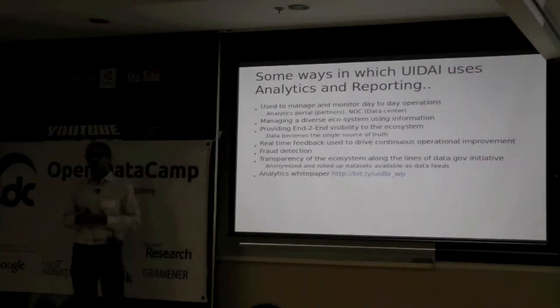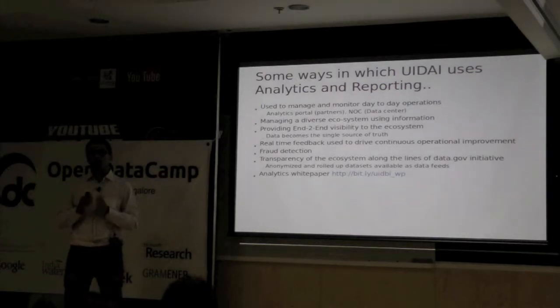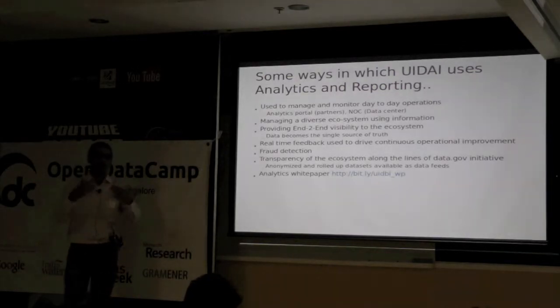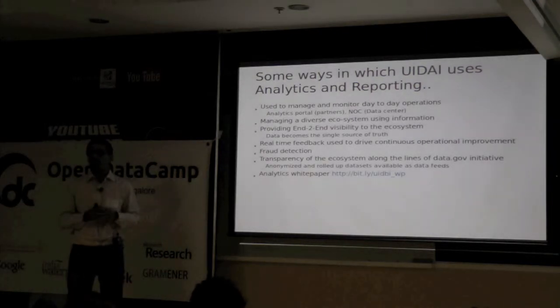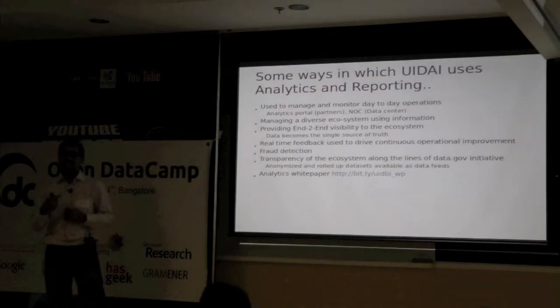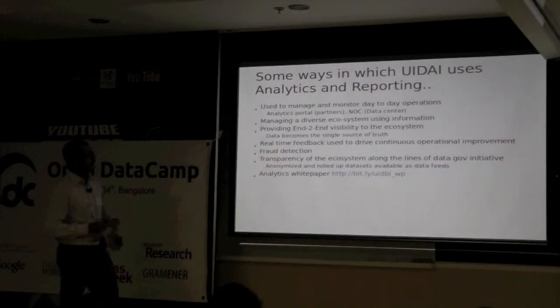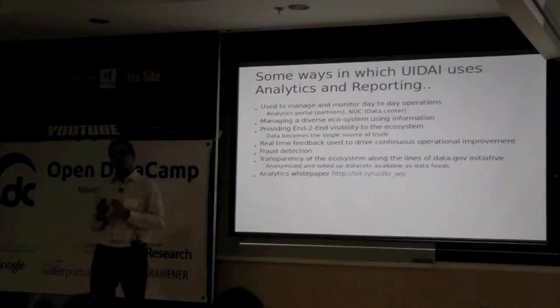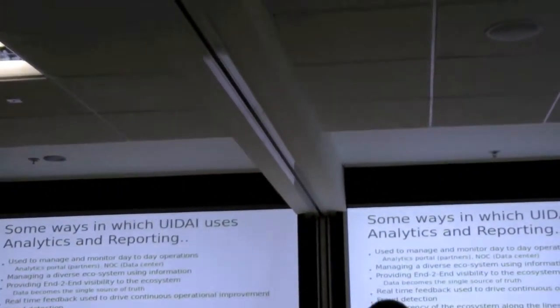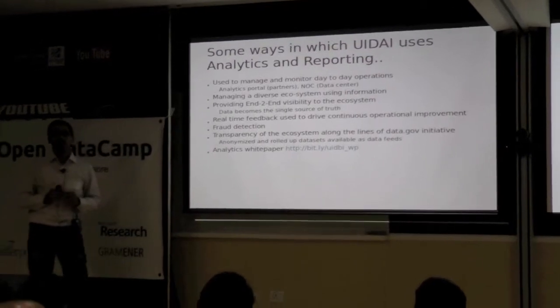We have fraud detection modules because there is obviously going to be natural behavior toward trying to beat the system. Based on the rule engines we have created, the fraud detection module scans each packet and determines whether it could be a potential fraud. If so, it goes through a separate set of processes. From a transparency perspective, we share operational data with the ecosystem. We also provide a lot of data as anonymized and rolled-up datasets externally, aggregated at certain levels depending on the dataset.